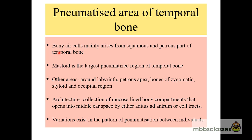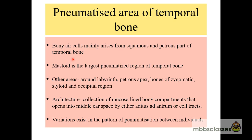The pneumatization of the temporal bone mainly arises from the squamous and petrous parts. Out of all the pneumatization of the temporal bone, the mastoid is the largest pneumatized area. Other pneumatized areas are present around the labyrinth — the semicircular canal — sometimes around the petrous apex, bones of the zygoma, styloid, and occipital region. These are collections of bony compartments lined by mucosa that open into the middle ear space by the aditus ad antrum or by other air cell tracts.